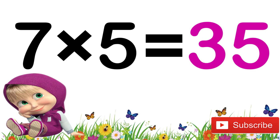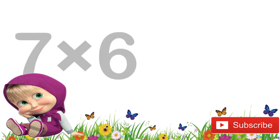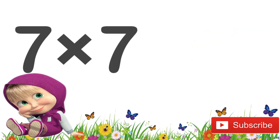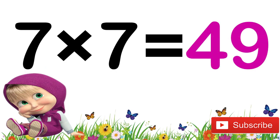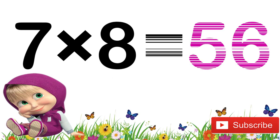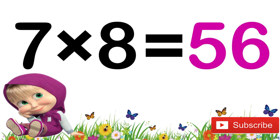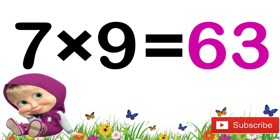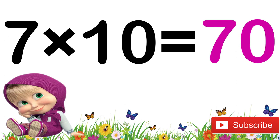7 sixes are 42. 7 sixes are 42. 7 sevens are 49. 7 sevens are 49. 7 eights are 56. 7 eights are 56. 7 nines are 63. 7 nines are 63. 7 tens are 70. 7 tens are 70.